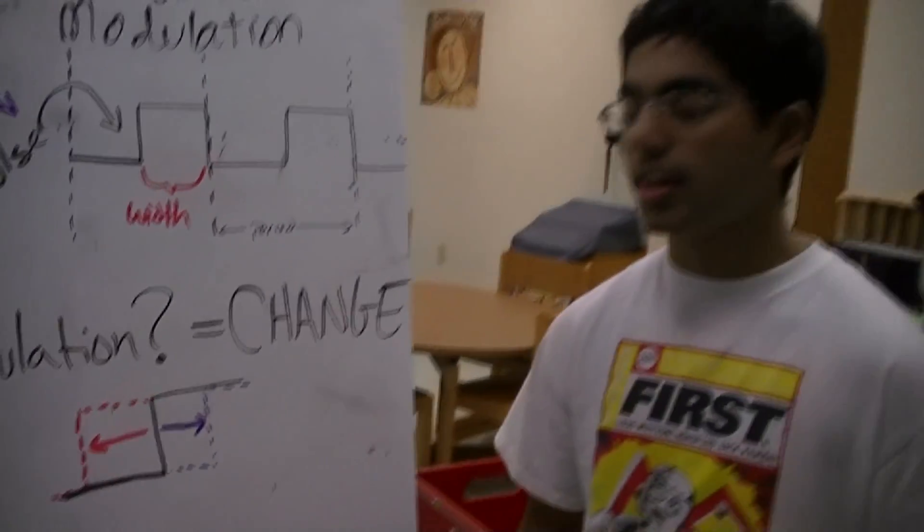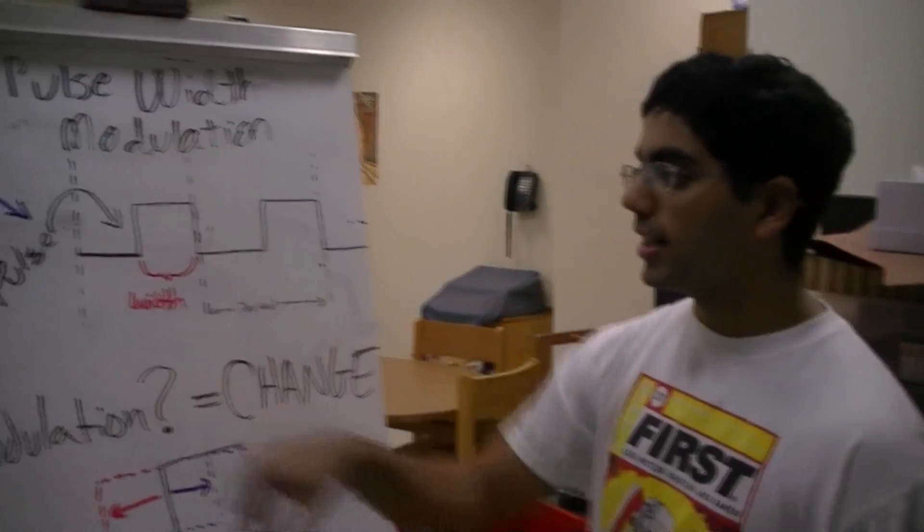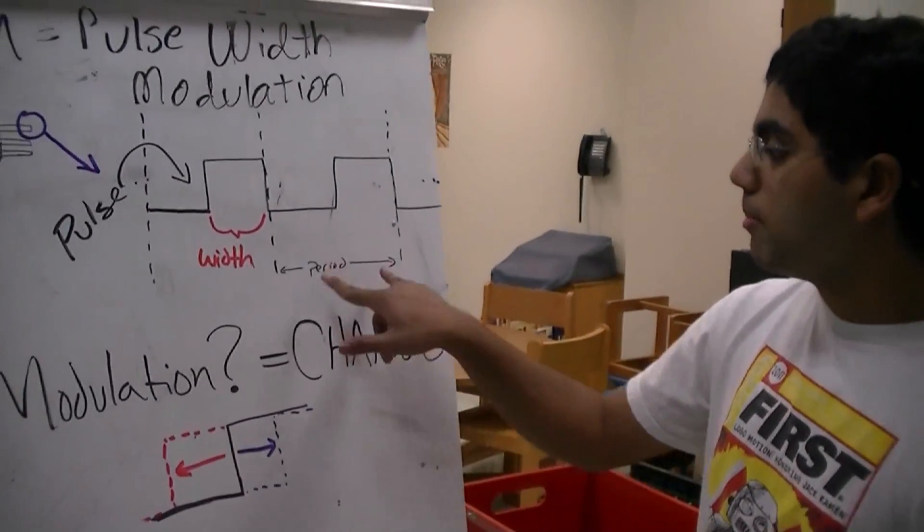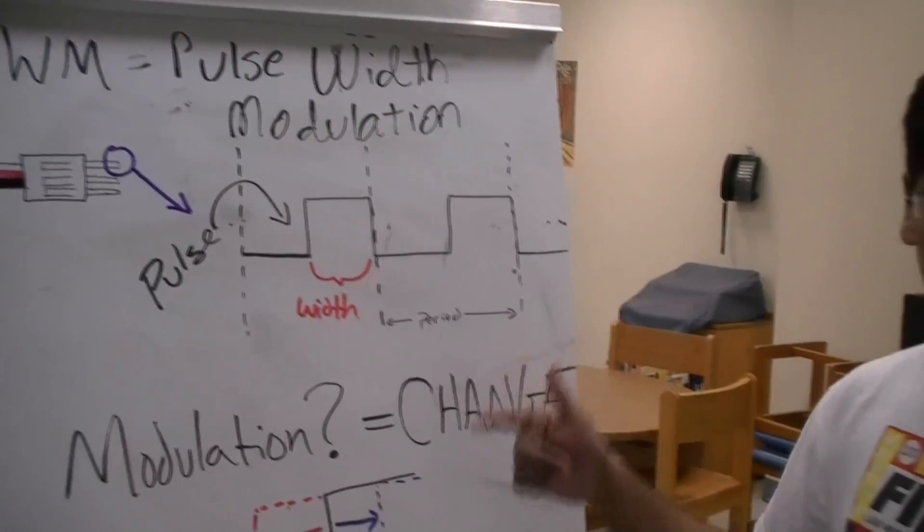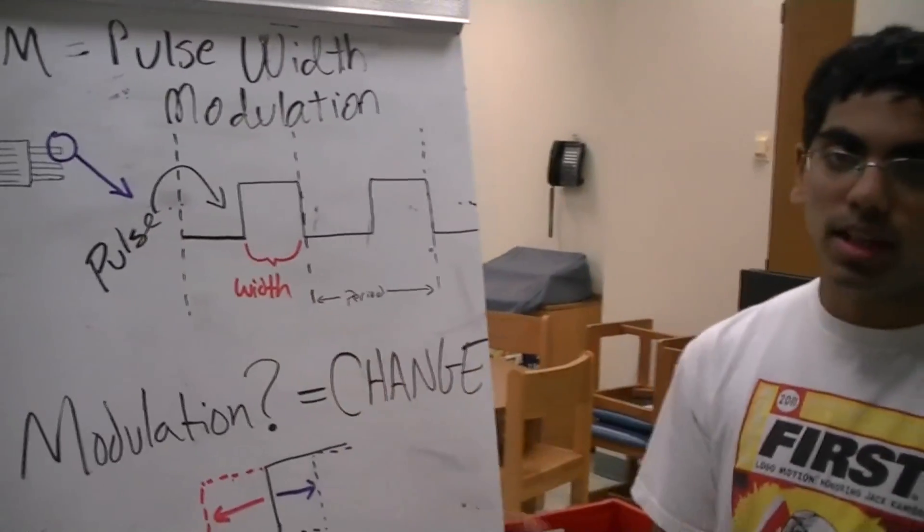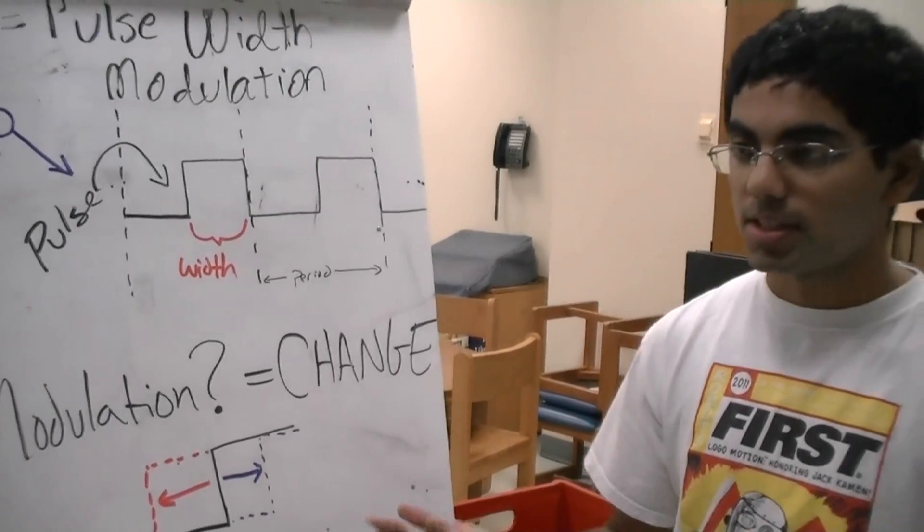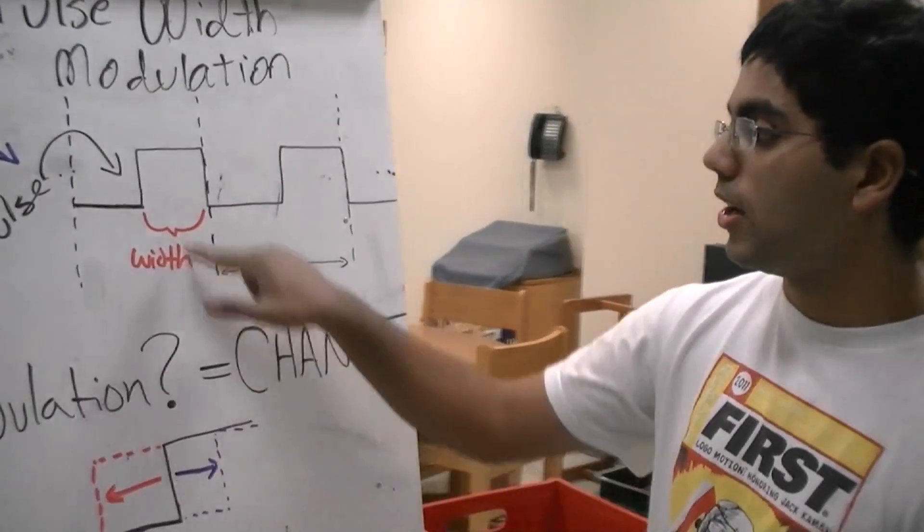So let's put this in an analogy. We say this entire thing is one package. The period is the envelope. Inside that envelope, there's a letter, which we can say is our pulse. So that letter has a bunch of details written inside it, and so we can say those details are our width.